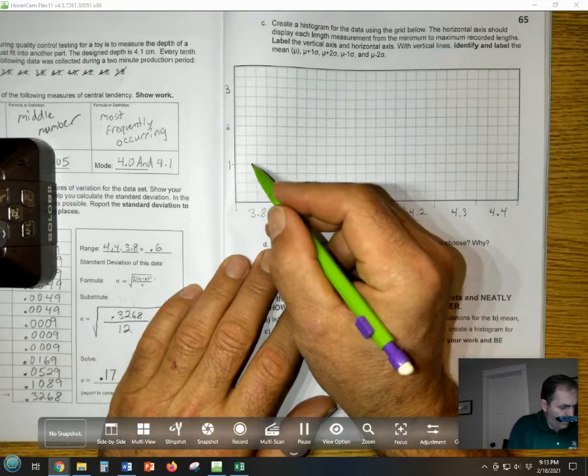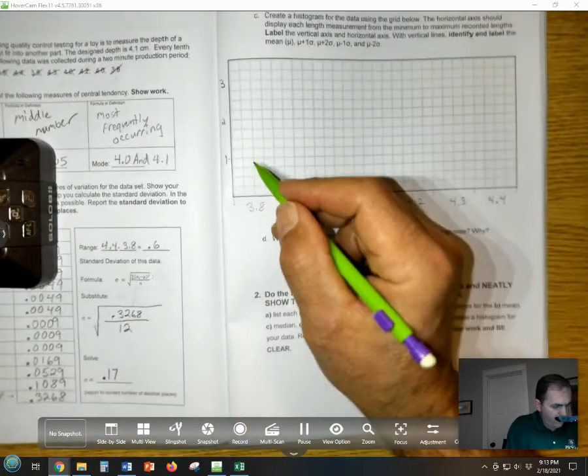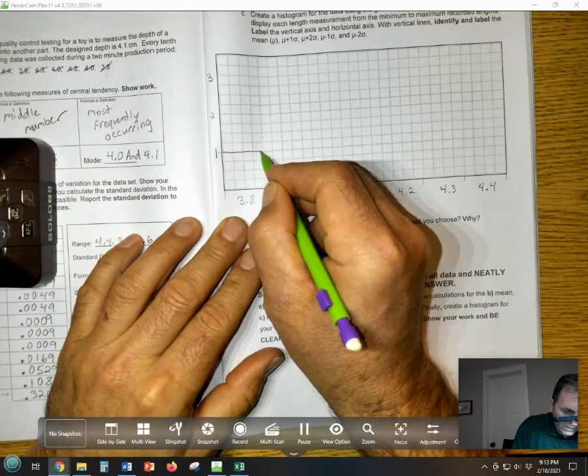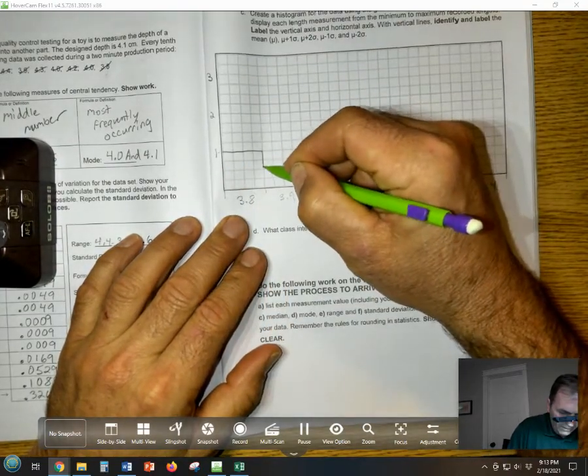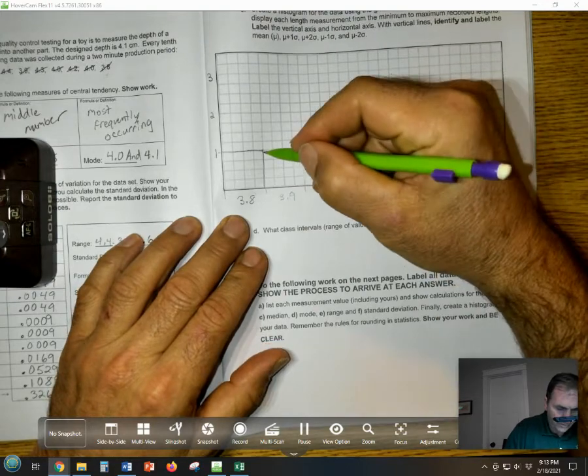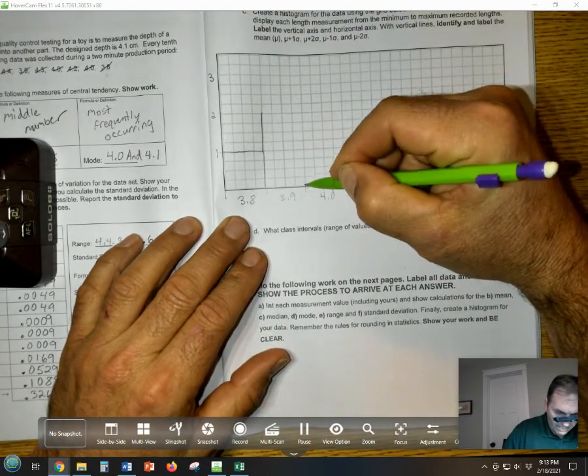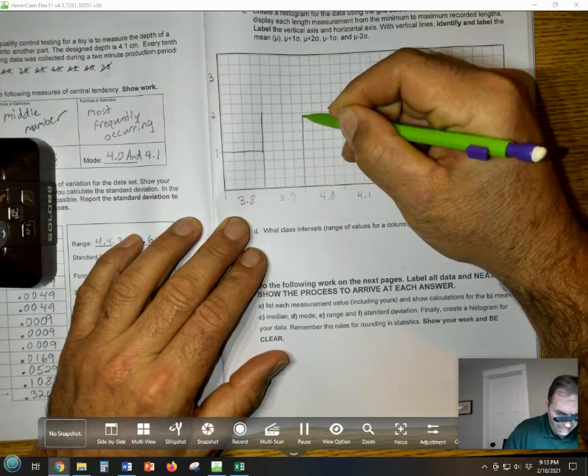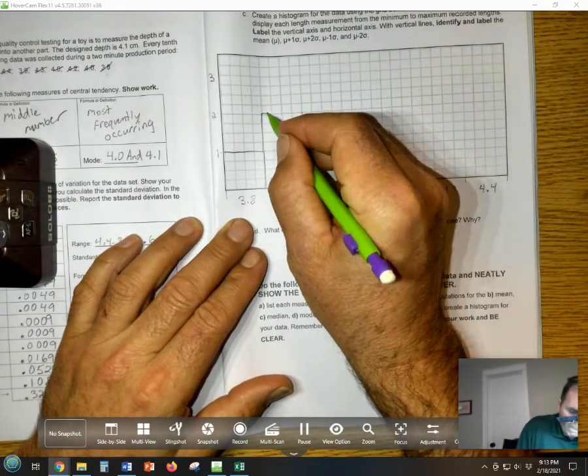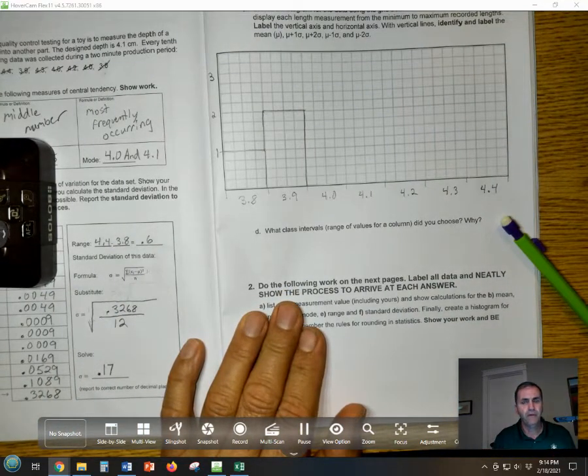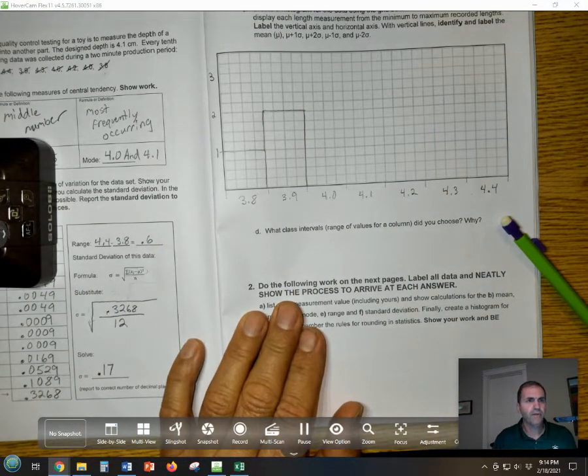There are two 3.9s, and continue to make your graph on across. Pause the video while you do that.